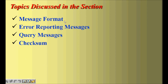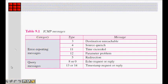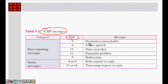The ICMP message format defines what needs to be included in error reporting and query messages. An ICMP message has a type field and a code field. The type tells us the category of the message — for example, destination unreachable, source quench, or time exceeded. The code inside tells us the subtype. Query messages include echo request and timestamp request.